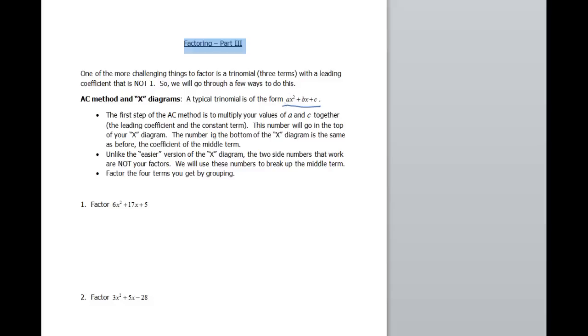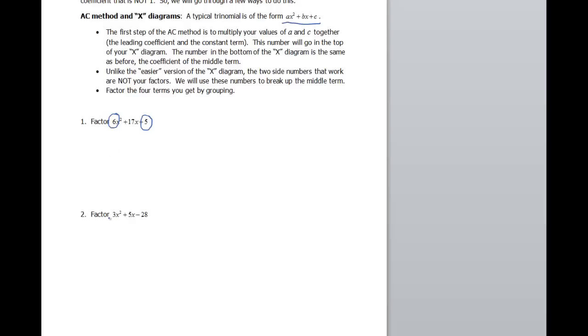The first step of the AC method is to multiply your a and your c together. In example number 1, we have 6x squared plus 17x plus 5. My a in this case is 6, my c is 5. When I make my X diagram, I'm going to multiply the 6 by the 5, so in the top I'm going to put a 30.